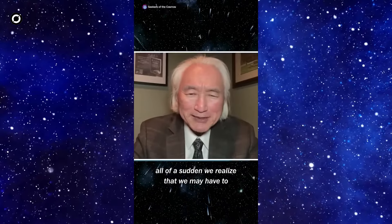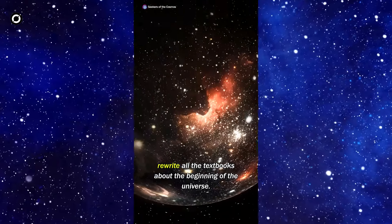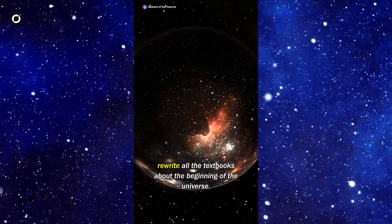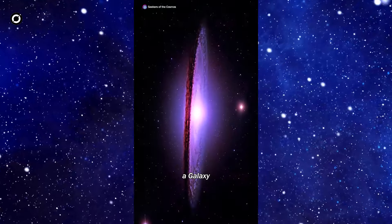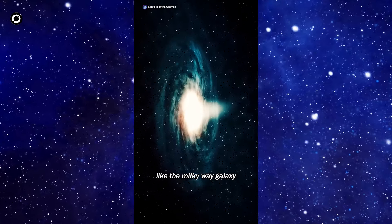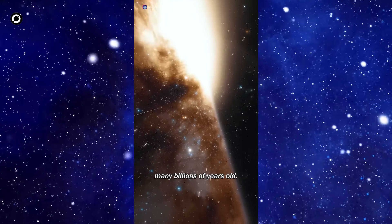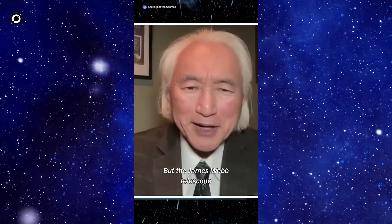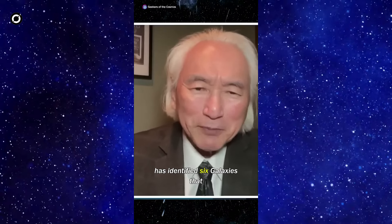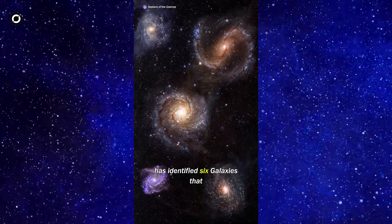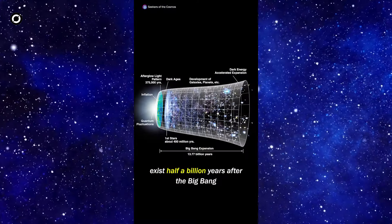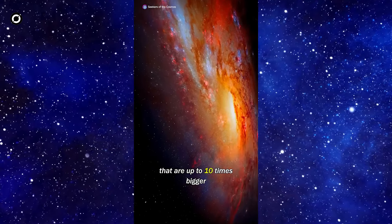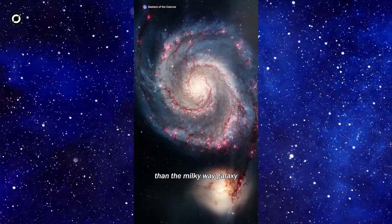All of a sudden we realize that we may have to rewrite all the textbooks about the beginning of the universe. Now it takes many billions of years to create a galaxy like the Milky Way galaxy with 100 billion stars, many billions of years old. But the James Webb telescope has identified six galaxies that exist half a billion years after the Big Bang that are up to 10 times bigger than the Milky Way galaxy.